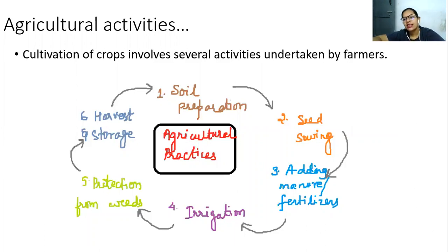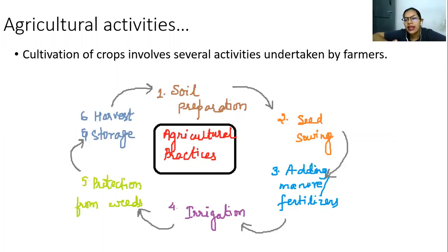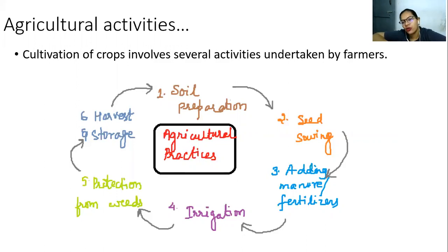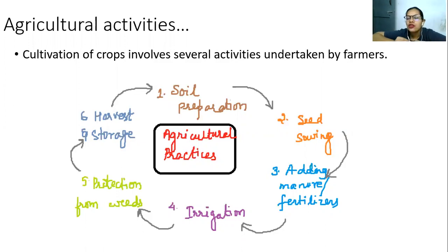What is the problem with weeds? They take all the nutrients, essential minerals, and water from the soil which are supposed to be taken by your crop plants. That is why we have to remove weeds — because they are fast growing and take all the nutrients and minerals. Next comes harvesting and storage, and everything must be done at the right time.